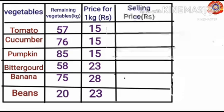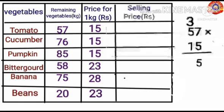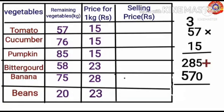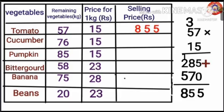To find the selling price of tomato, multiply 57 and 15. 57 into 15: 5 into 7 is 35 — write 5 here and 3 is the carryover. 5 into 5 is 25, plus 3 is 28. 1 into 7 is 7, 1 into 5 is 5. Adding together: 5 plus 0 is 5; 8 plus 7 is 15 — write 5 here and 1 is the carryover; 2 plus 5 is 7, plus 1 is 8. Selling price of tomato equals Rs. 855.